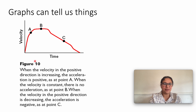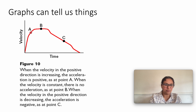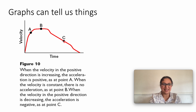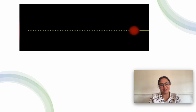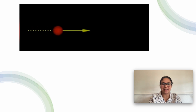In the graph, you can see that at point A, the velocity is in the positive direction and increasing. At point B, the velocity is constant. At point C, the velocity is decreasing and the acceleration is negative. If an object is moving with constant velocity, it has zero acceleration.